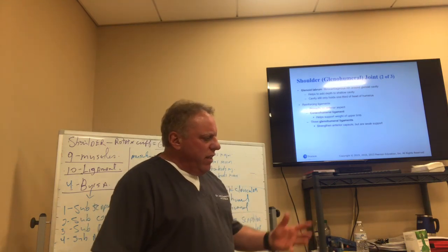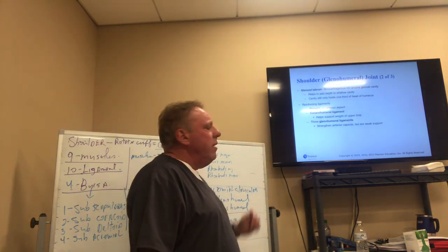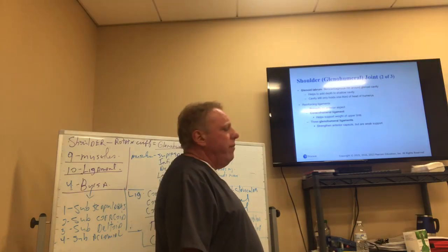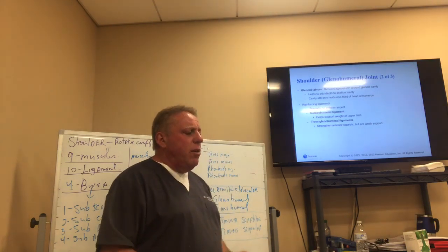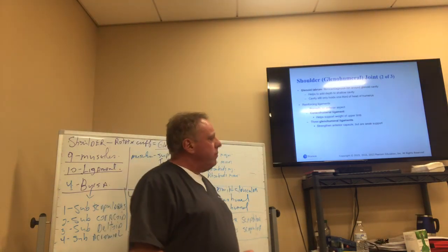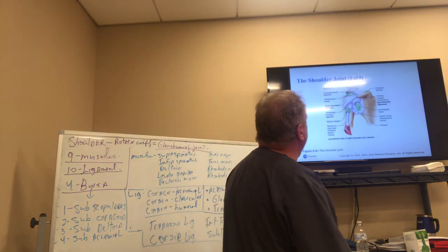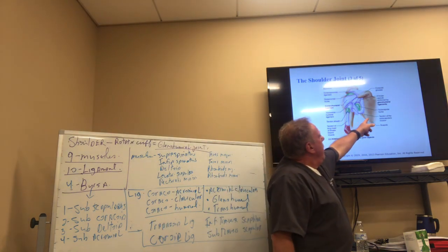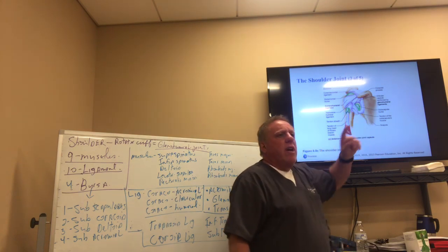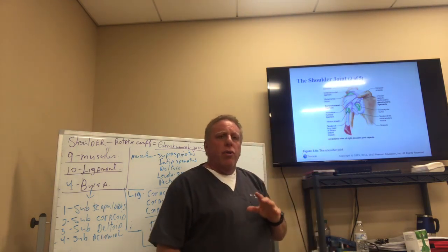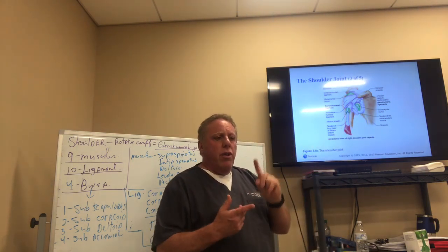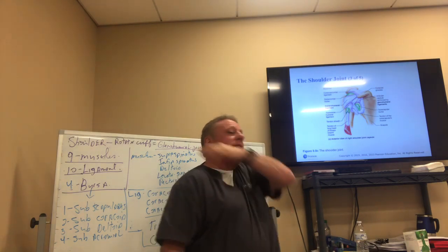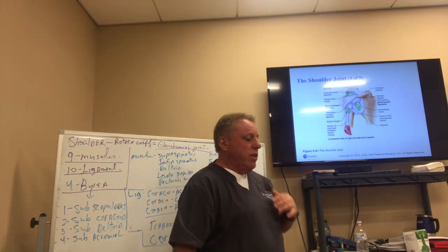These are some slides that I want you to look at. Now, in the scapular bone — see, this is the scapular bone, this is the humerus. The bones of the shoulder are the humerus, the clavicular bone, and the scapula, which is in the back.